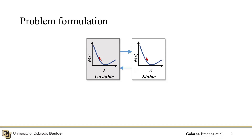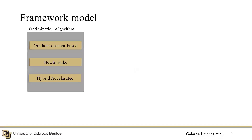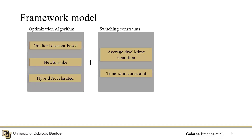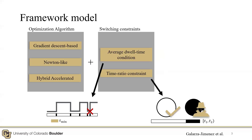The attack tampers the direction and magnitude of the gradient or the Hessian estimator, a fundamental element of the learning dynamics. Our objective is to study the resilience properties of the Extremum Seeking controllers with respect to persistent multiplicative attacks. Our system studies a gradient descent-based, a Newton-like, and a hybrid accelerated algorithm. To guarantee stability under attack, we impose additional conditions: the average dwell-time condition avoids arbitrarily fast switching, and the time ratio condition sets how long the system can be under attack while preserving nominal stability.